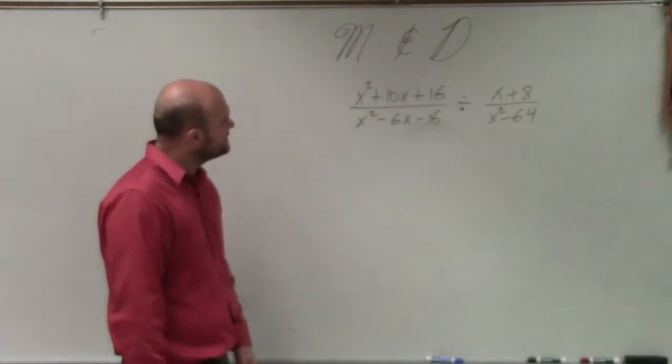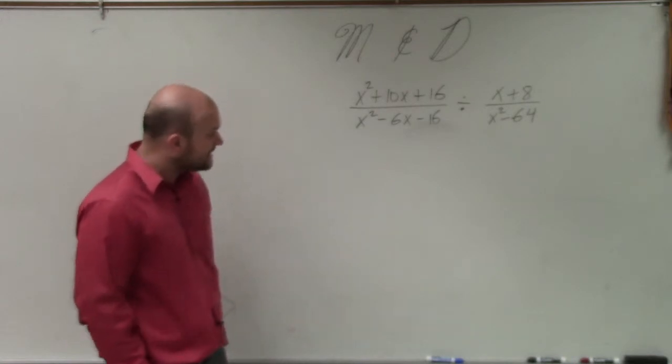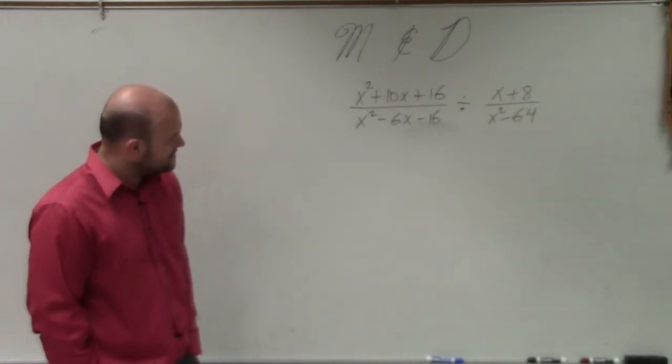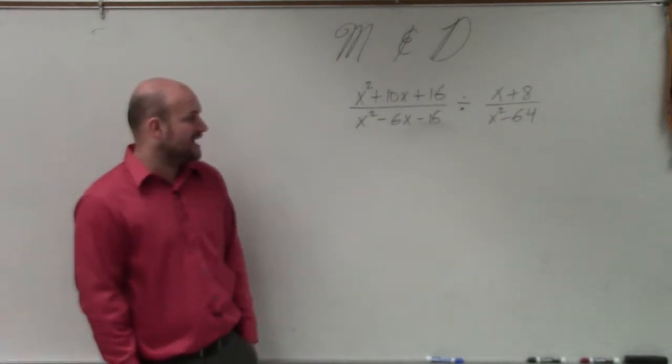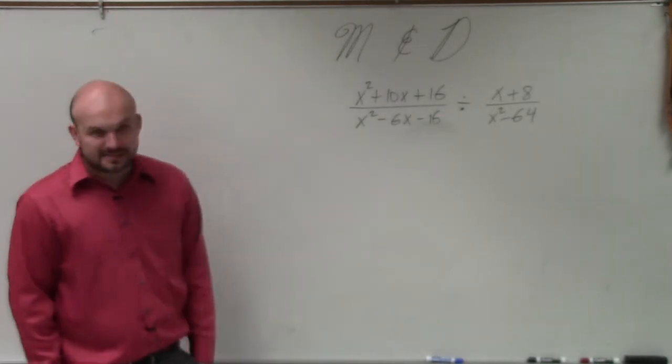All right, so now on the last one, ladies and gentlemen, we have x squared plus 10x plus 16 divided by x squared minus 6x minus 16 divided by the rational expression x plus 8 over x squared minus 64.